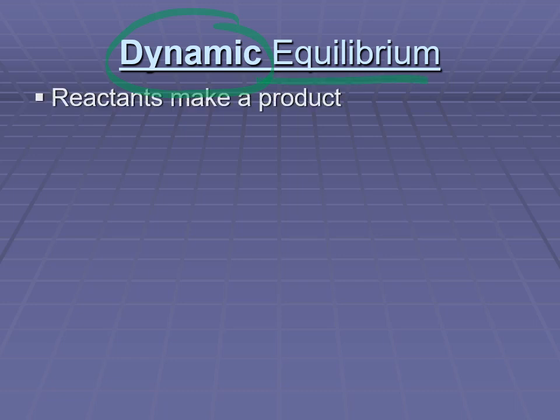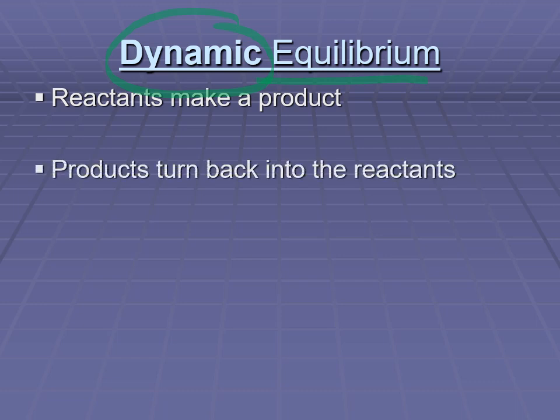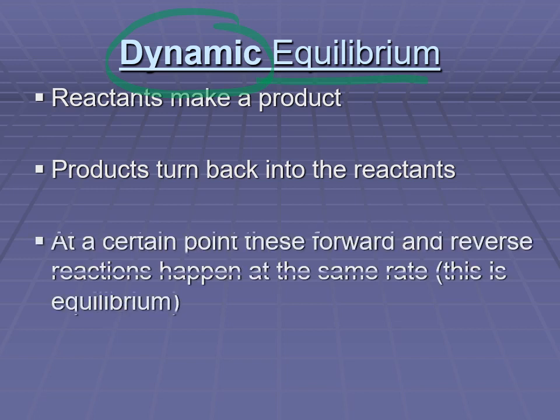When you have some reactants, they can go to make a product. If the system doesn't establish equilibrium, that's all you need to worry about. However, in some cases, if equilibrium is established, those products that are produced can turn back into the reactants. At some point, assuming the conditions are correct, the rate of the forward reaction and the rate of the reverse reaction is going to equalize.